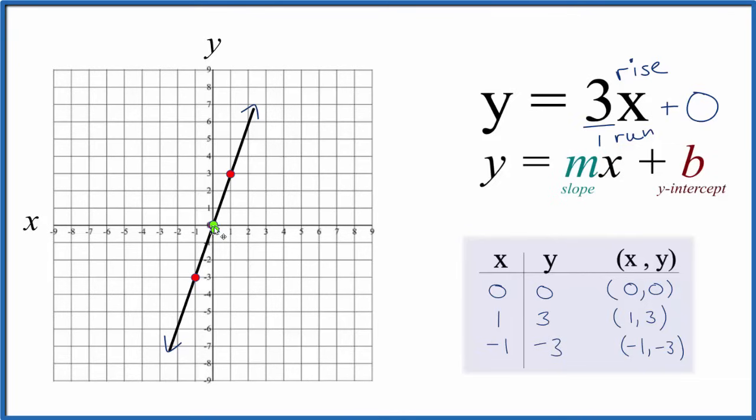From the y-intercept, we go up 1, 2, 3, over 1, and repeat: up 1, 2, 3, over 1. We can also go down 3 and over 1 in the opposite direction. Down 1, 2, 3, over 1 in the opposite direction.